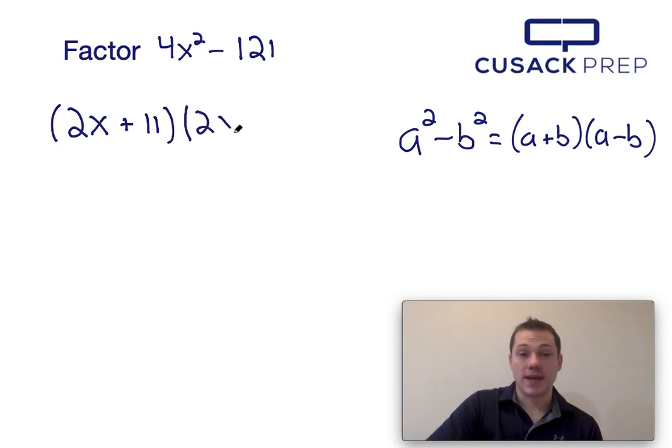So I just do 2x plus 11 times 2x minus 11 by plugging in for a and b into the right side of this equation. And that's how you factor 4x squared minus 121 using the difference of squares equation.